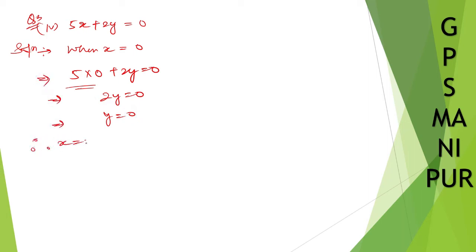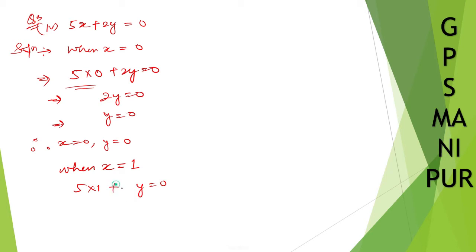Therefore when x is equal to 0, y will be 0. When x is equal to 1: 5 into 1 plus 2y equal to 0, so 5 goes to the other side, 2y is equal to minus 5, so y is equal to minus 5 by 2.